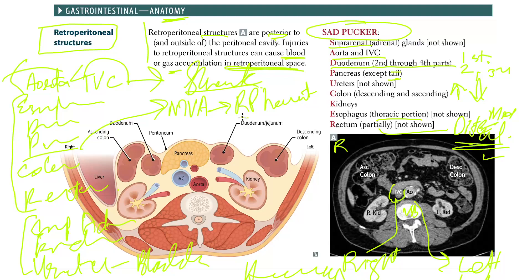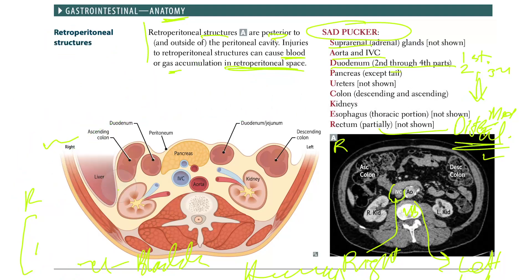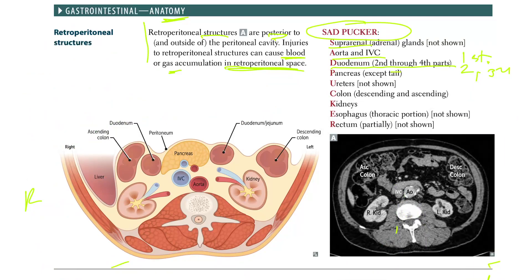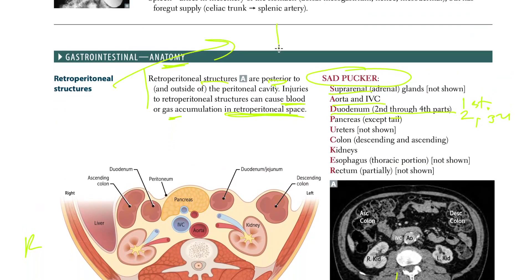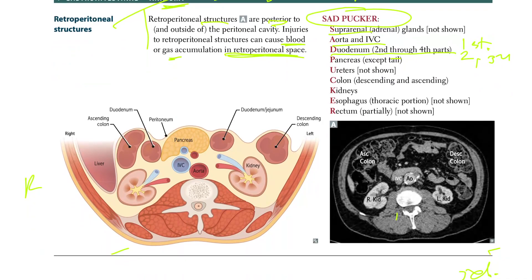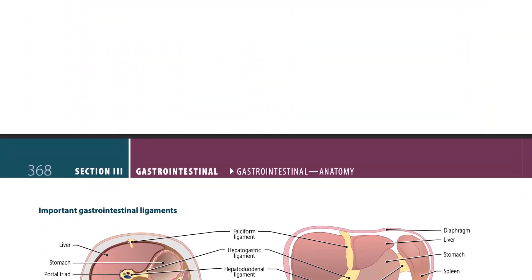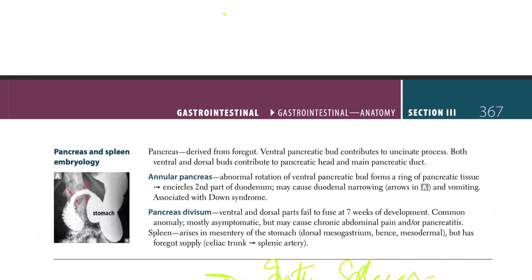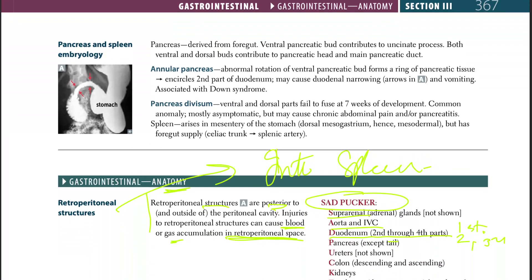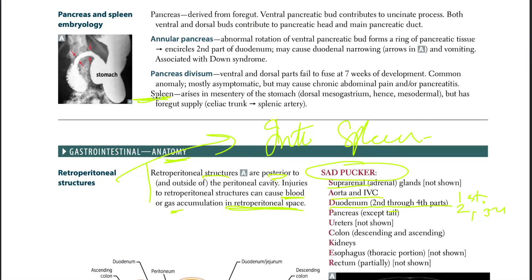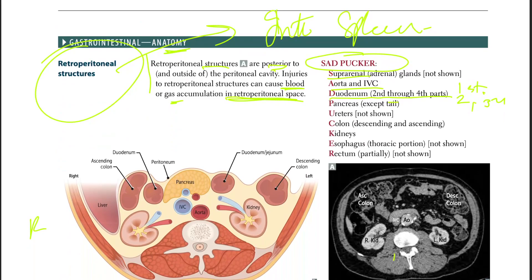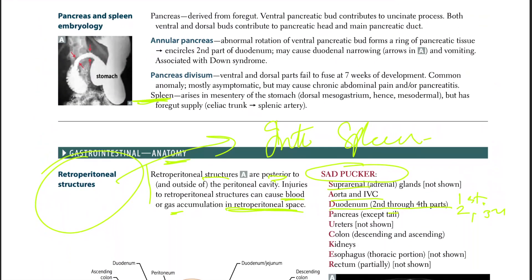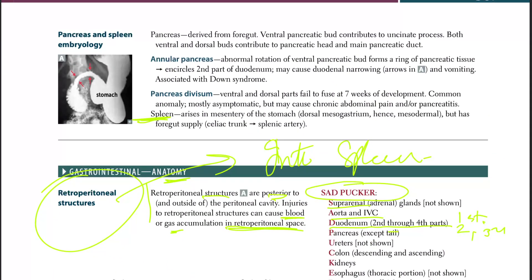Regarding the spleen — the spleen is intraperitoneal, not retroperitoneal. If you rupture the spleen, that will be covered next. Moving on, let's talk about pancreas and spleen embryology.